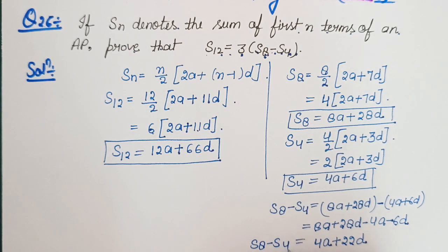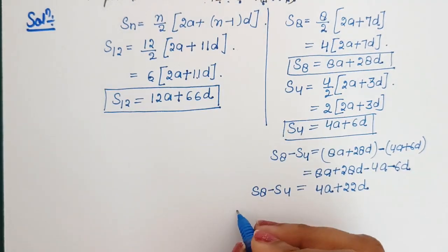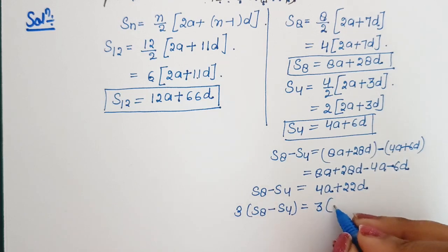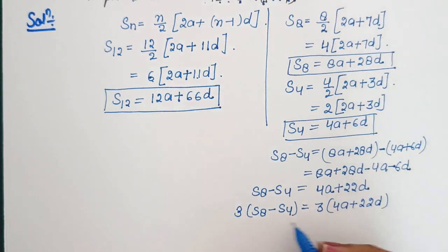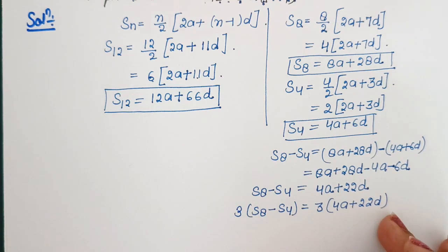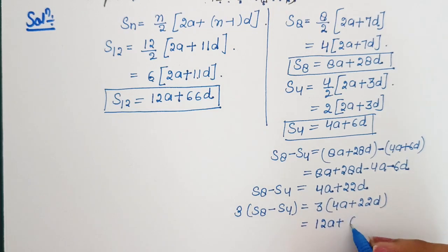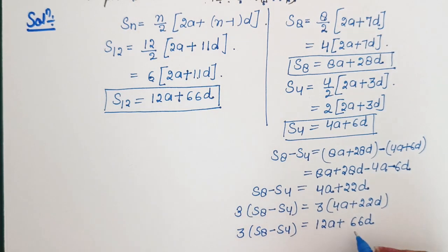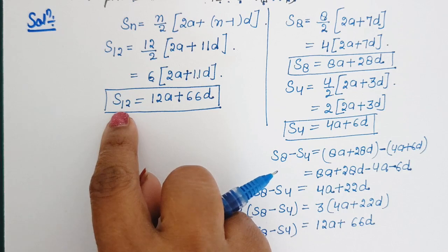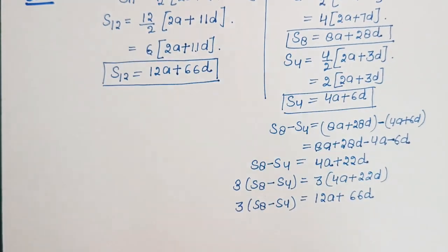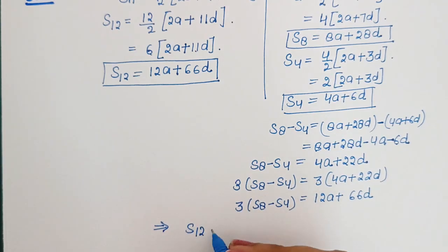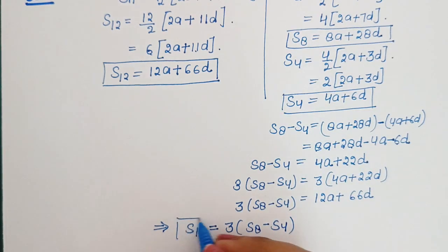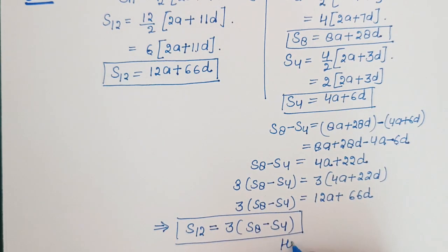We have the value of S8 minus S4, and this is equal to 4A plus 22D. S8 minus S4 ki value humein mili hai, and this is equal to S12 kyunki S12 ki value bhi humein yehi same mili thi. So this implies that S12 is equal to thrice of S8 minus S4. Hence proved.